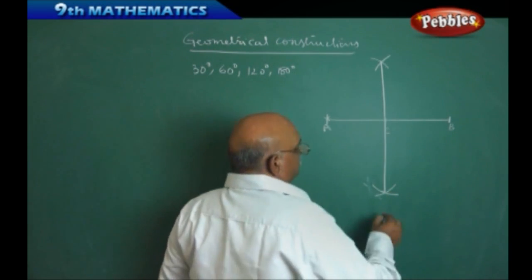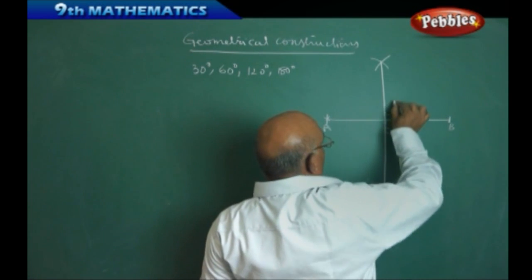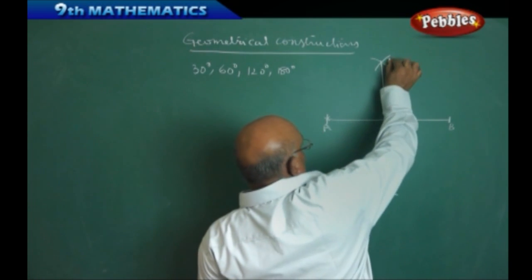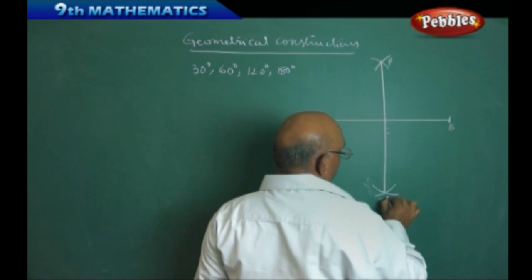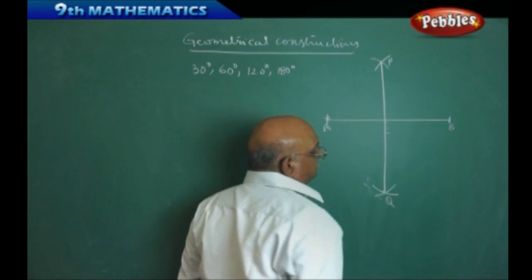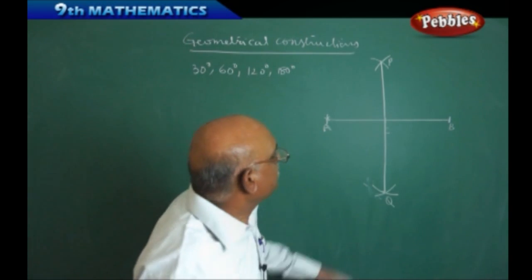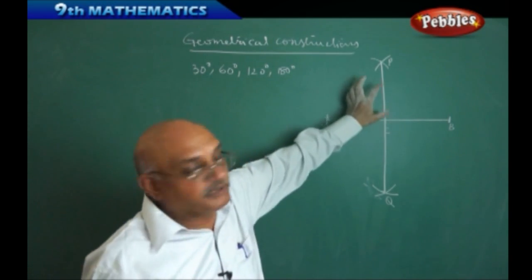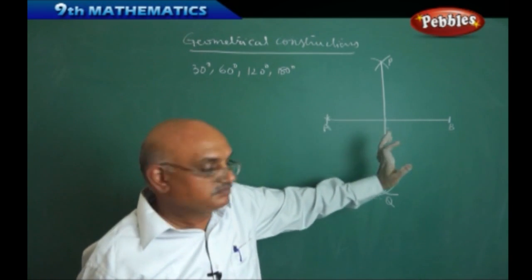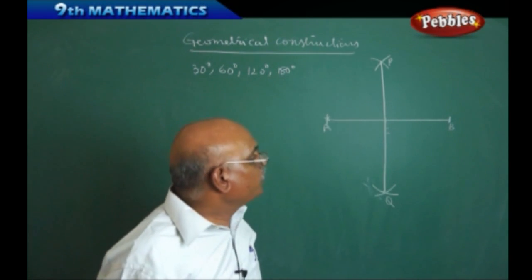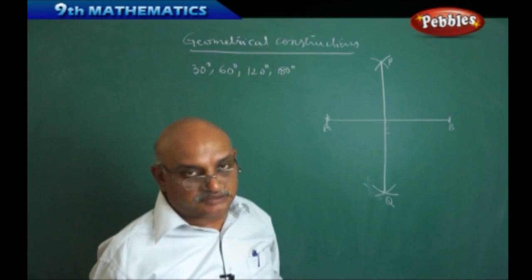We call the intersection points P and Q. We can say that PQ is a perpendicular bisector to AB. Let us see how we did this and what we can derive from it.